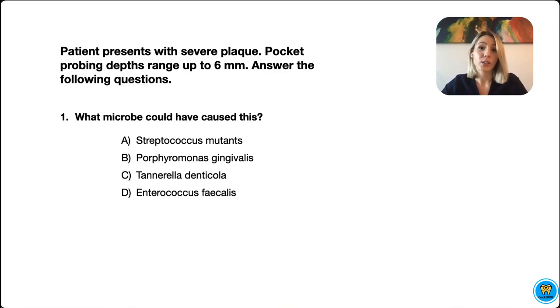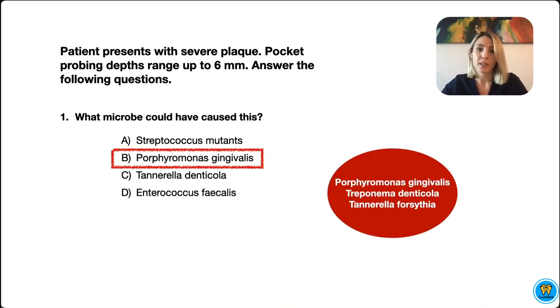The correct answer here is B, Porphyromonas gingivalis. This bacteria is actually the main bacteria in the red complex and it causes chronic gingivitis.